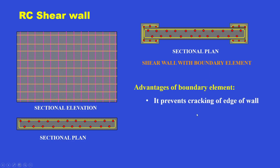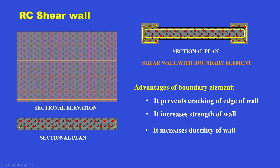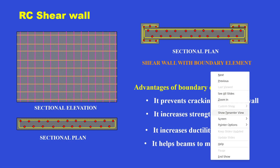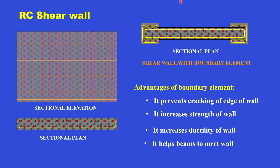The advantages of providing boundary elements are: it prevents cracking at the edge of the wall, since the convex side under bending undergoes tension and concrete will crack — boundary elements prevent that. It increases the strength and ductility of the wall — ductility being very important so the structure does not fail at small displacement. It also helps beams connect to the wall, since beams can frame into the boundary element as they would into a column, making detailing and construction easier.